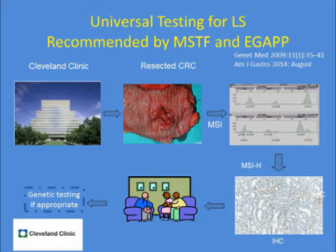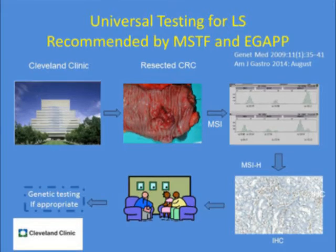At the Cleveland Clinic, when a patient is diagnosed with cancer, the operative specimen is sent for MSI testing as the first step. If abnormal, the patient goes on to immunohistochemistry. If immunohistochemistry is also abnormal, the patient meets with a genetic counselor to discuss the results, and then, if appropriate, germline genetic testing is performed.